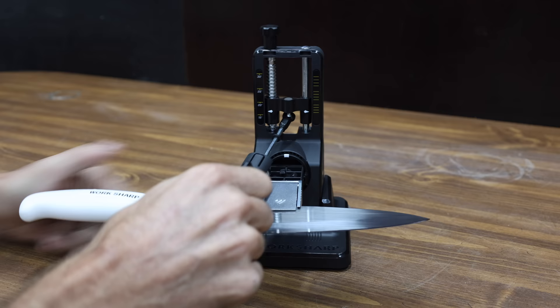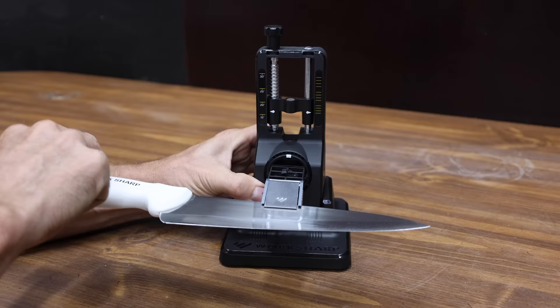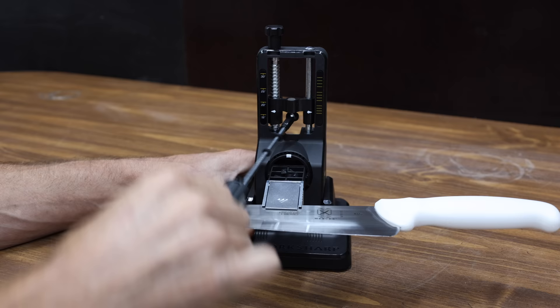This knife is extremely dull, so let's begin with 220 grit. Using light pressure and long strokes, start at the heel of the blade and swipe abrasive back and forth while moving along the length of the cutting edge towards the tip. Stop on the tip of the blade. Continue until you feel a burr on the opposite side of the blade along the entire edge. Once you've created a burr, press the spring-loaded button on the back of the sharpening chassis and carefully rotate the V-block clamp 180 degrees to sharpen the opposite side.